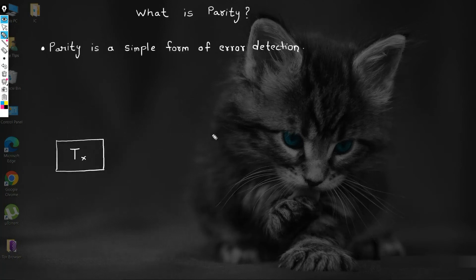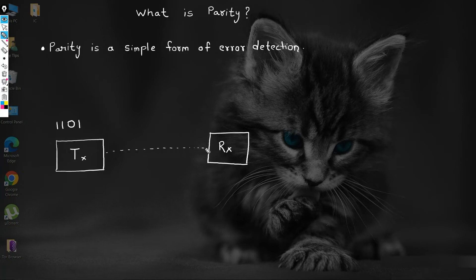Suppose there is a transmitter, and here we have a receiver. We want to transmit a small string of data, say 1101. But we should also ensure that the receiver receives the right data at its end. To make this happen, we use the concept of parity. Along with data, we also transmit one extra bit, known as a parity bit, that tells if the data has an odd or even number of ones.